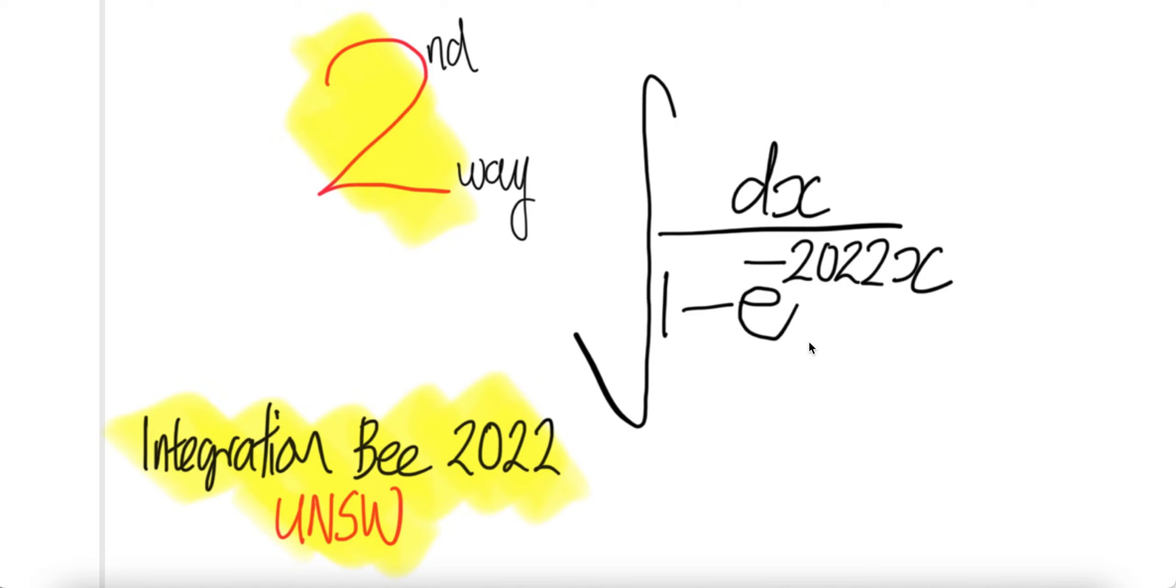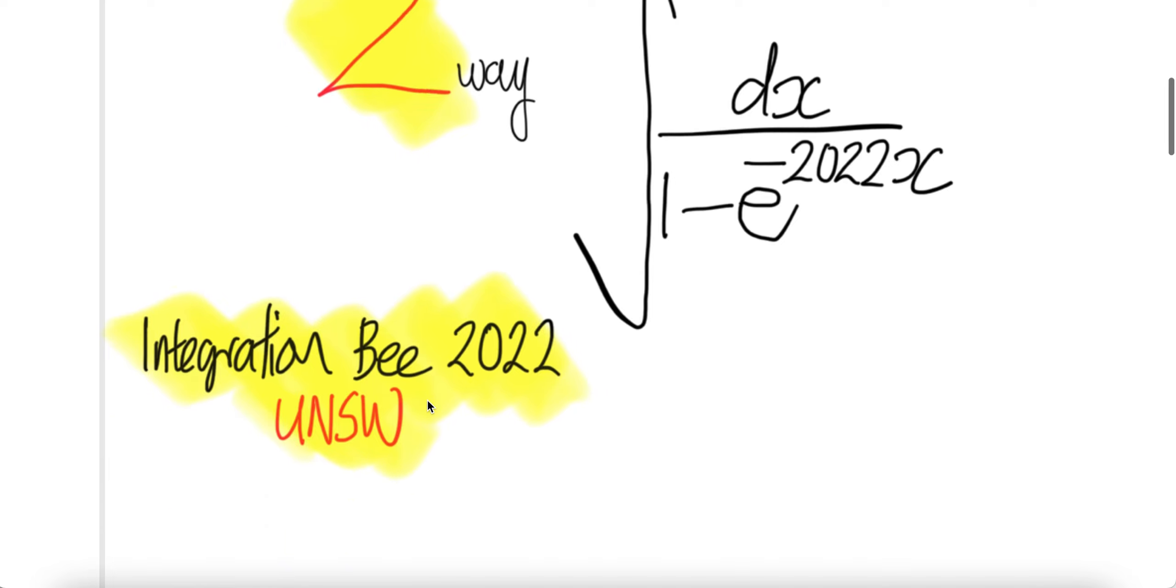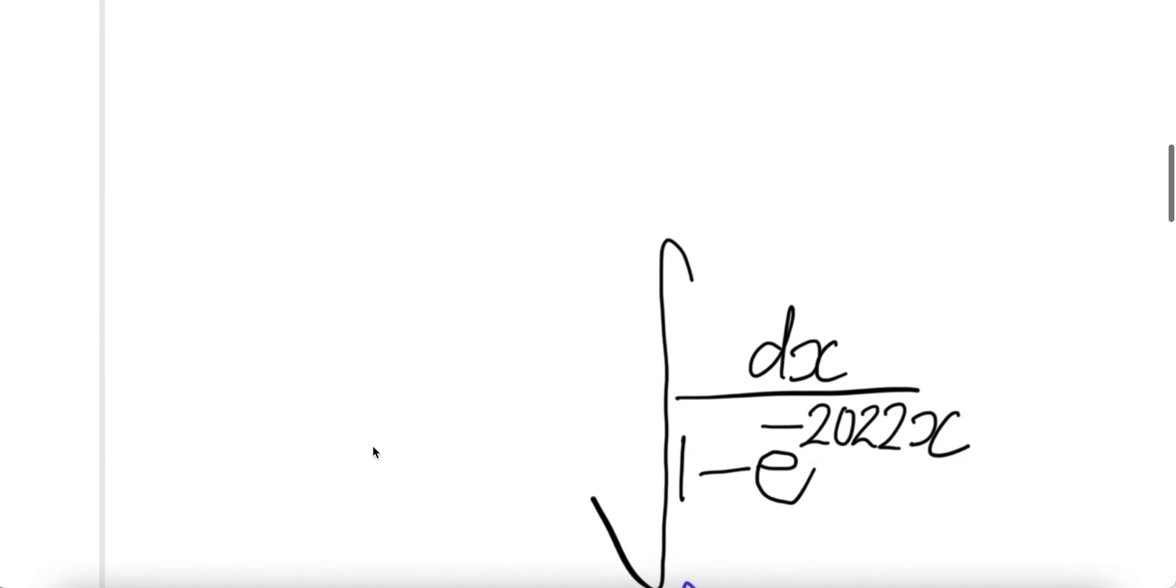Integral 1 over 1 minus e to the power of negative 2022x. Let's do a second way to get this integral problem from Integration Bee 2022 UNSW.